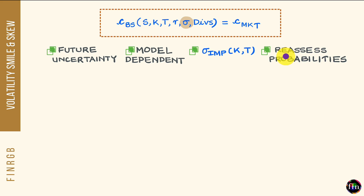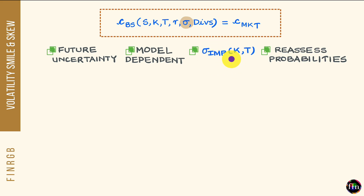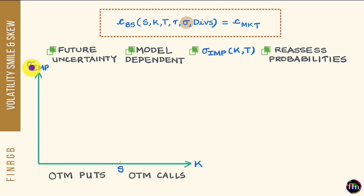I am talking about extreme moves here, and this aspect we will revisit towards the end of this video. Now let us dig deeper into this concept of volatility smile and take a look at it visually. For this purpose, let us make a plot of sigma implied versus K — sigma implied on the y-axis, K the strike on the x-axis.